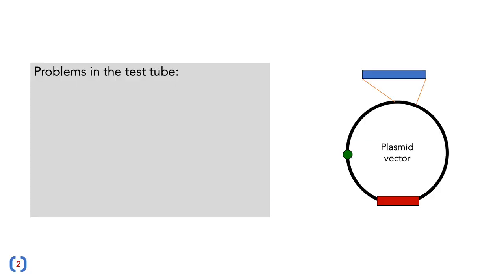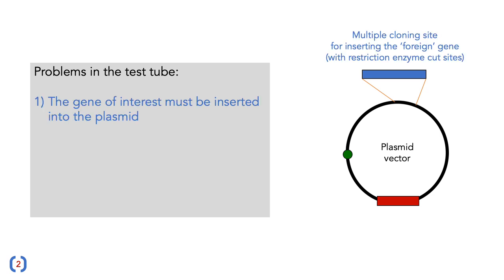But how do we take plasmids from a natural setting and use them in the lab? There are a number of problems when creating genetically modified organisms in the test tube, so we use plasmid vectors. The first problem is that the gene of interest — the gene you want to take from another organism — has to be inserted into the plasmid. We do this using a multiple cloning site, which is a series of restriction enzyme cut sites that allow us to open up the plasmid and insert the gene of interest.